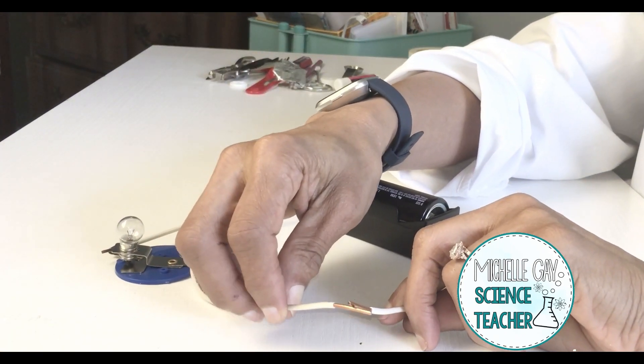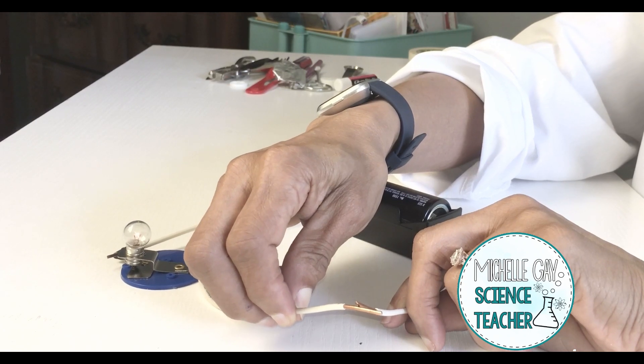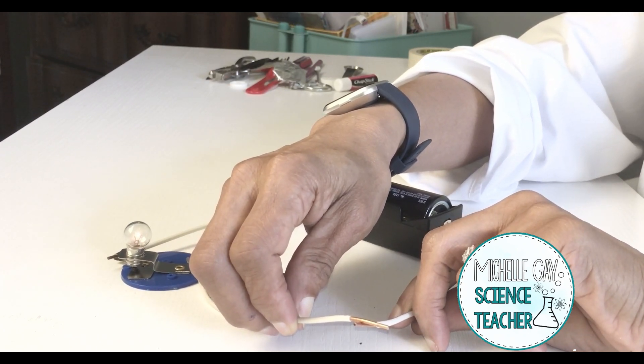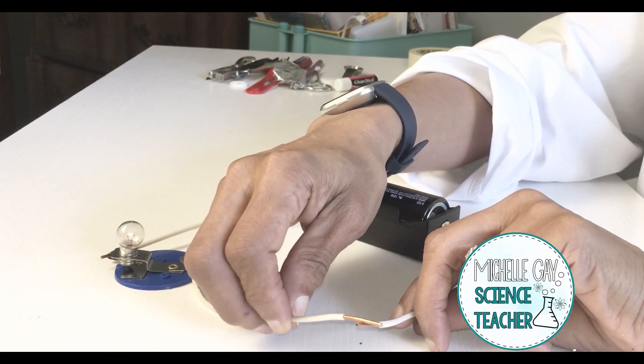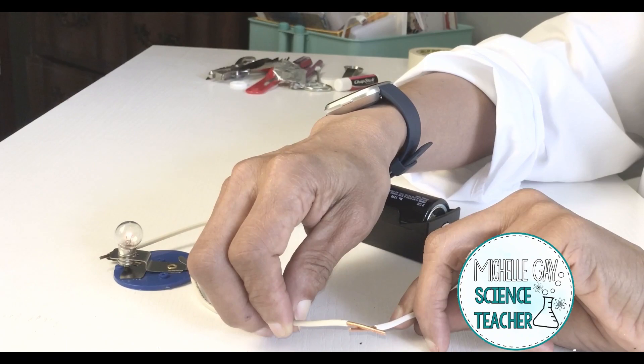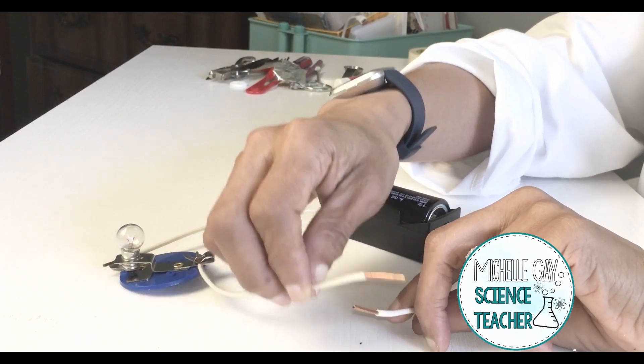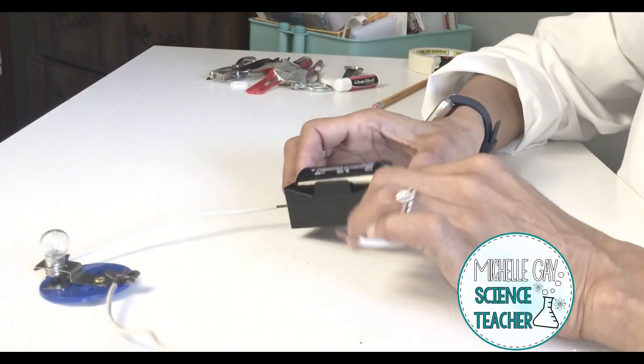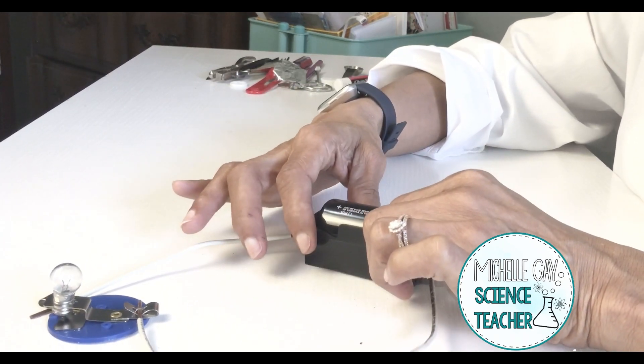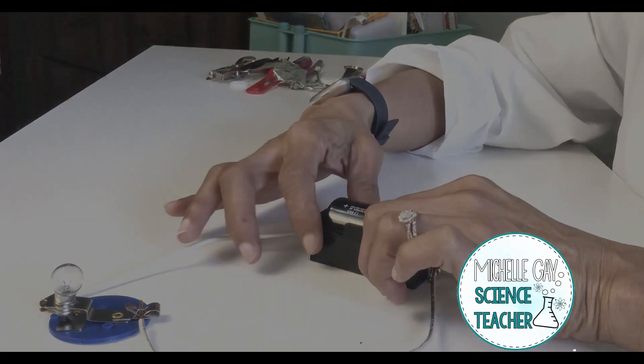As you can see, the bulb is trying to come on. It's coming on. We want it a little bit stronger. Now, the good thing about the battery holder is that if you don't touch these wires and you just touch the battery holder, you're safer.